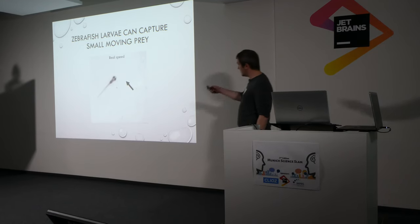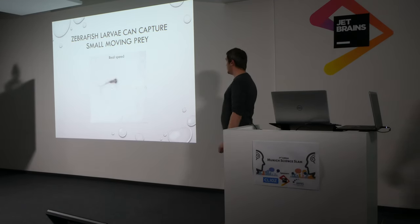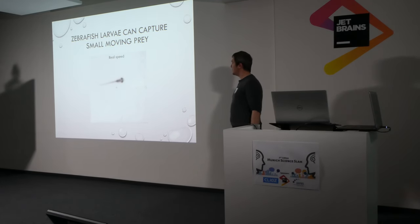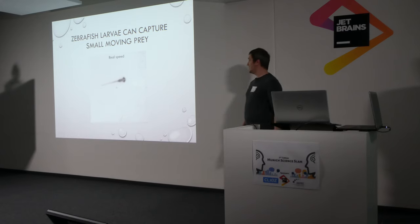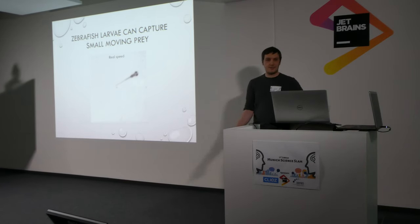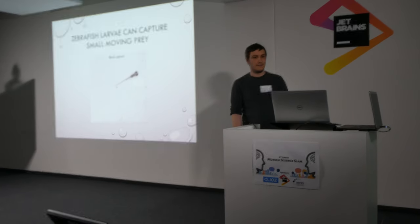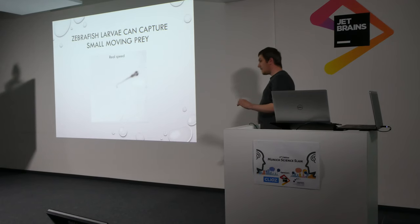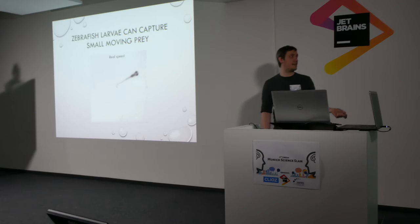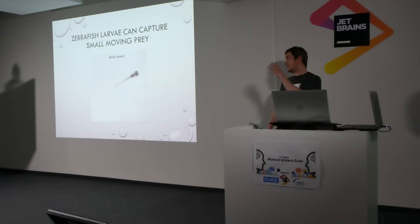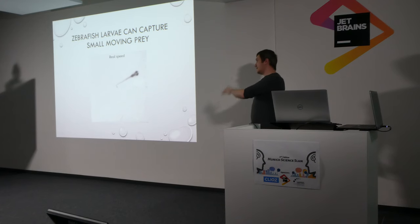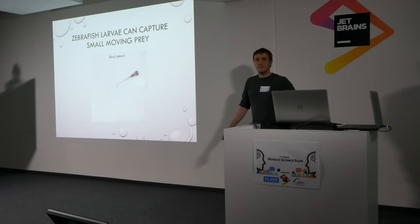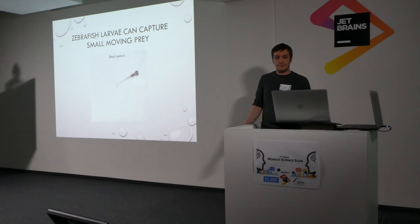So there is one here, which you might see when it starts moving. There's a full speed, and the fish is able to catch it. And the fish can do this with only 100,000 neurons. And in my PhD, I'm trying to understand how this tiny zebrafish larva and the tiny larval brain is able to do this really, really complicated task.